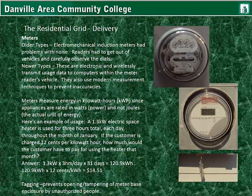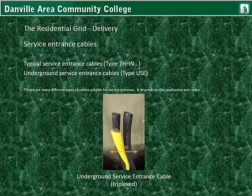Tagging prevents opening and tampering of the meter base enclosure by unauthorized people. It's a special clip with its own code on it. Service entrance cables — the typical service entrance cable ran in conduit would be type THHN, and there are other types. Another type used is the underground service entrance cable type USE, which can be run straight underground without any conduit. There are many different types of cables suitable for service entrance, and it depends on the application and codes.